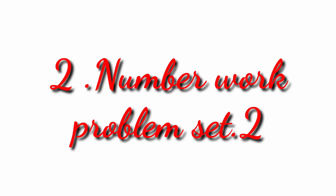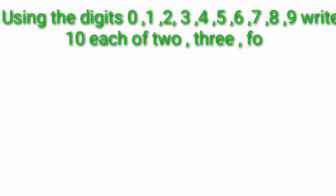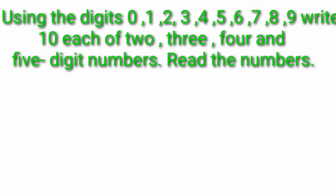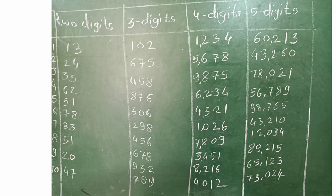Hello students, today we are doing the second lesson — Number Work, Problem Set 2. The first question is: using the digits 0, 1, 2, 3, 4, 5, 6, 7, 8, 9, write 10 each of 2, 3, 4, and 5-digit numbers. You use each given digit only one time and make numbers to fill in the chart.